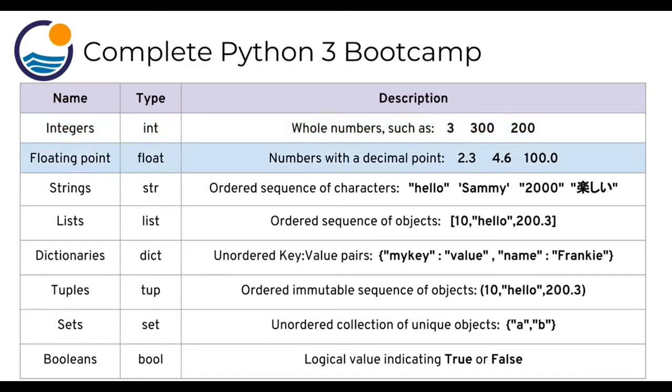Then we have floating point numbers and those are numbers with a decimal point: 2.3, 4.6, 100.0. And notice here that even if you have 100.0, that still counts as a floating point number. That's no longer an integer because it has a decimal point.